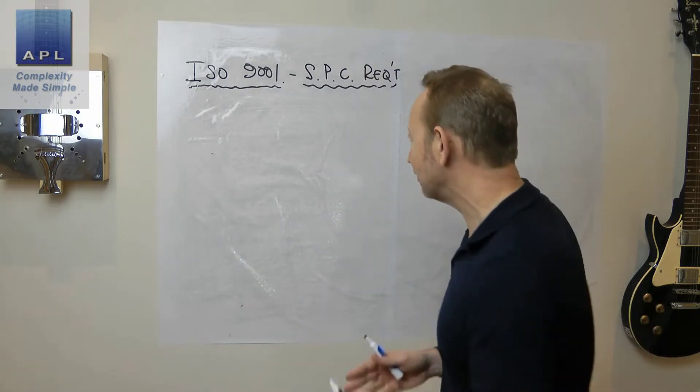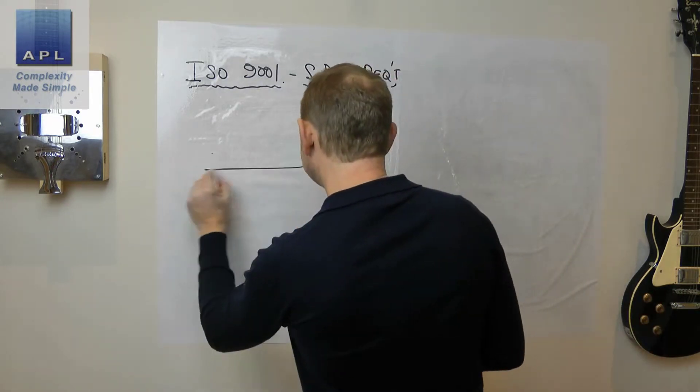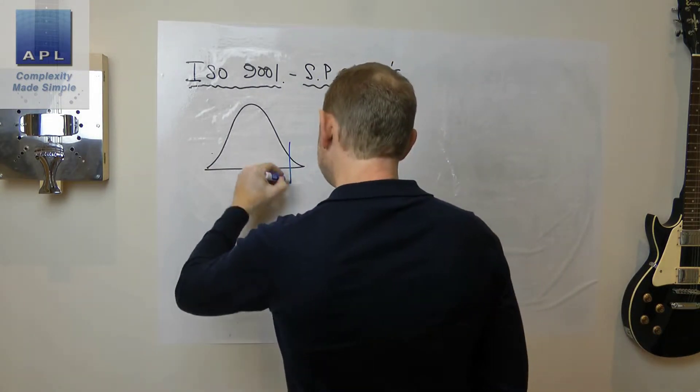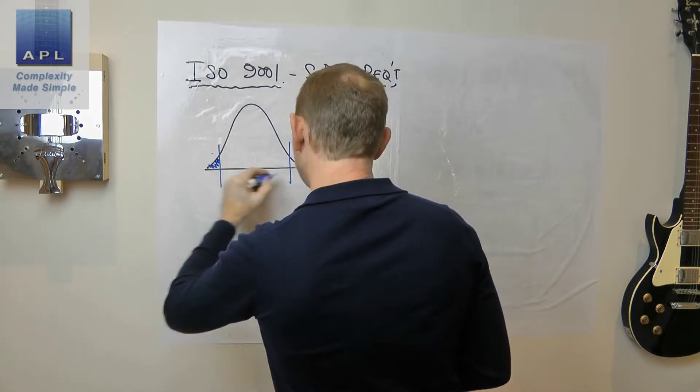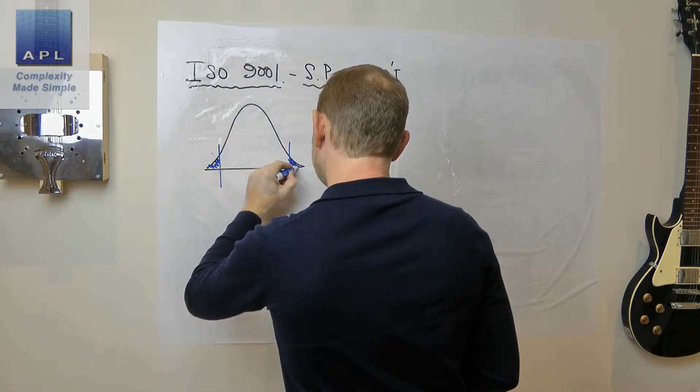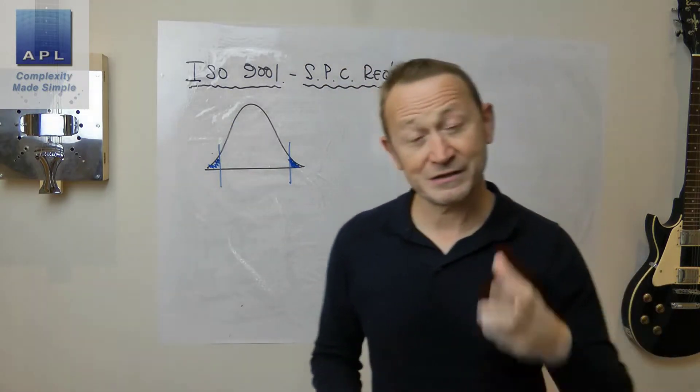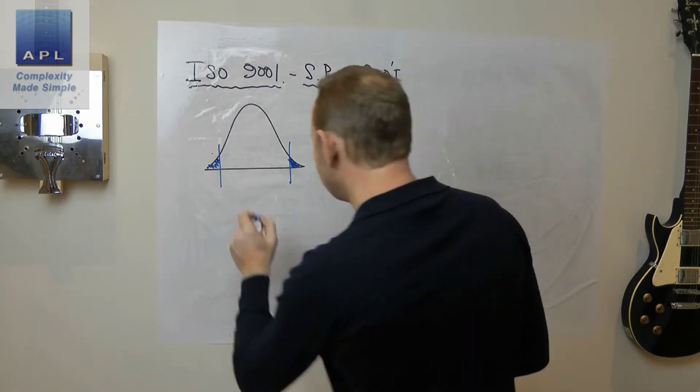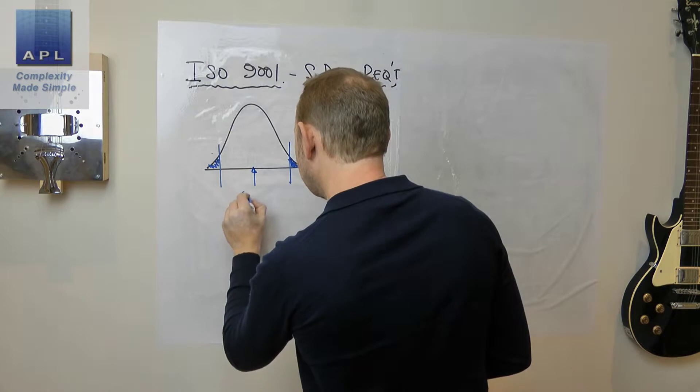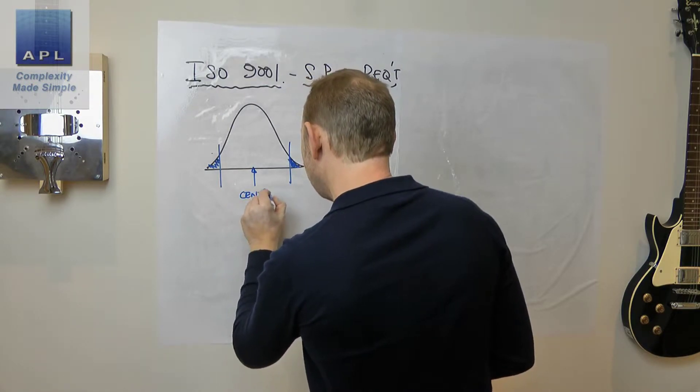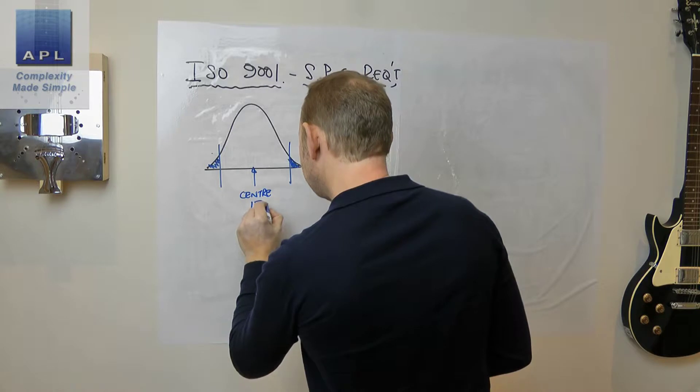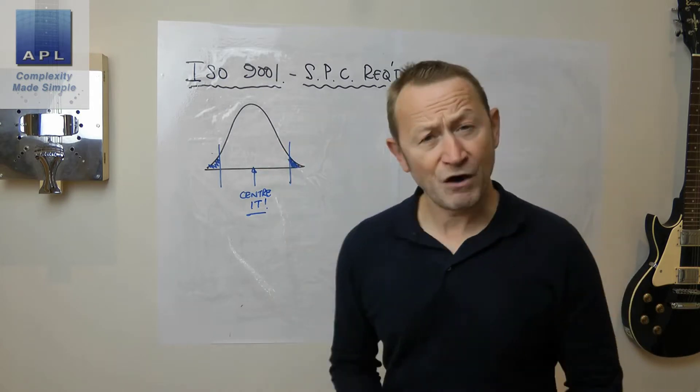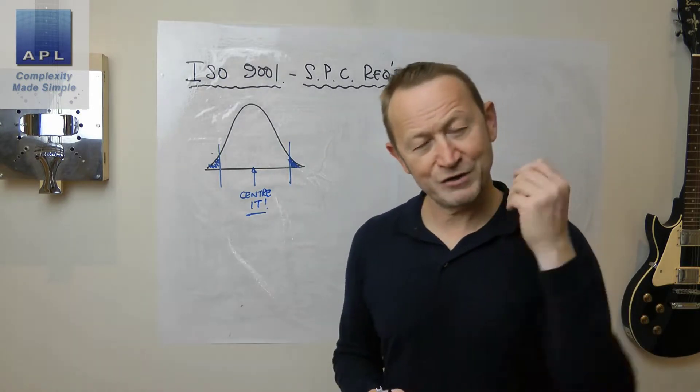Let me show you why. Here's your process. Here's the way that you've set it up. Here's the way your technician has set the process up. They've centered it perfectly. Unfortunately it's not a process that's capable, but they've done their job brilliantly because they've centered it. By the way, that's as much as they can do. An operator can do no more than to center it.